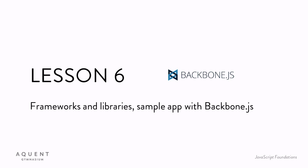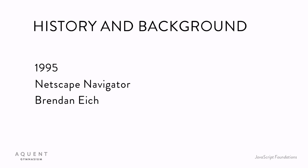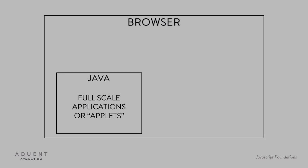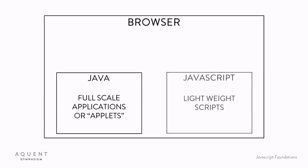Before we dive in in earnest, let's cover a little background and history. JavaScript was created in 1995 by Brendan Eich at Netscape. At that point, Java was already incorporated into browsers, allowing developers to deliver full-scale applications, or applets, in webpages. JavaScript was intended as a lightweight alternative for adding smaller bits of interaction and functionality. Interestingly, it's rare to run across a Java applet these days, but full-scale JavaScript applications are all over the place. It's worth noting that beyond the two having similar names, there's no relationship at all between Java and JavaScript — JavaScript is not a light version of Java. The two are completely different languages.